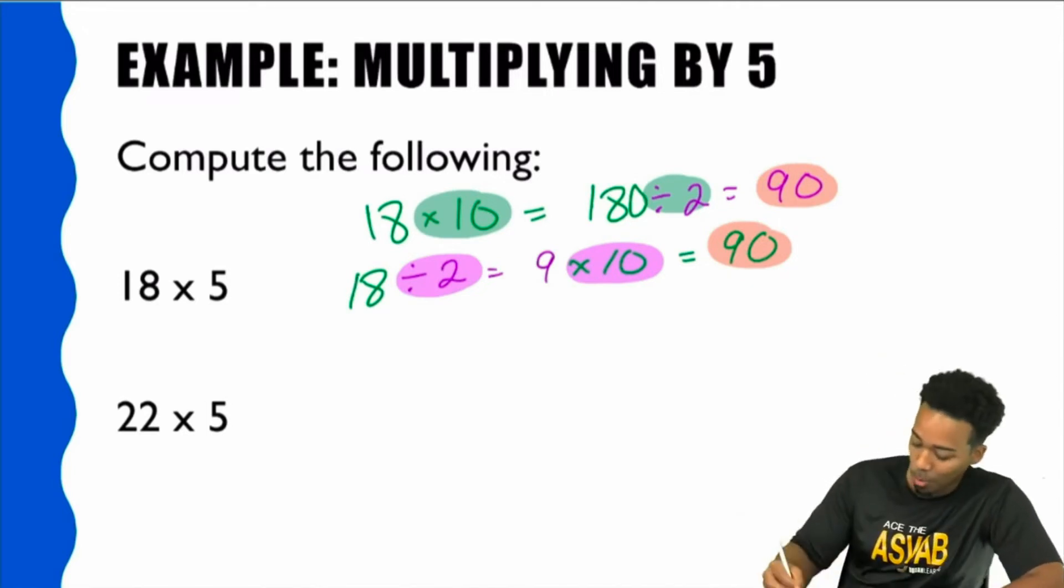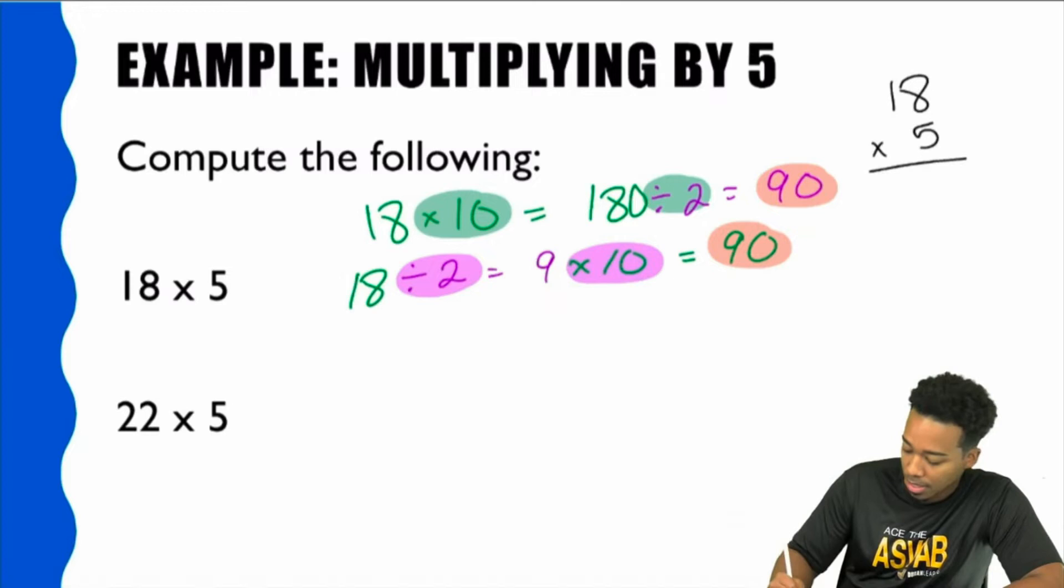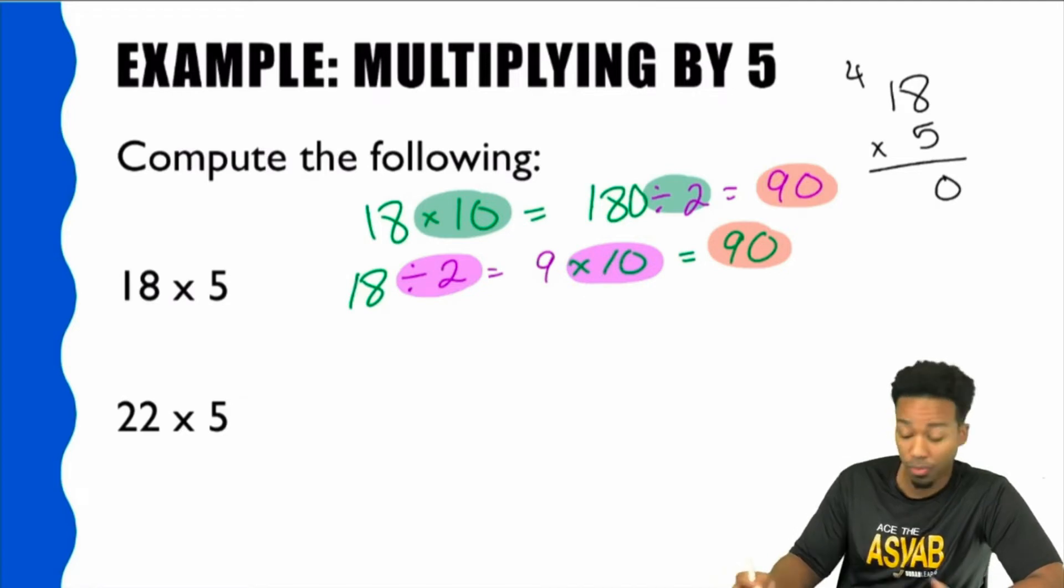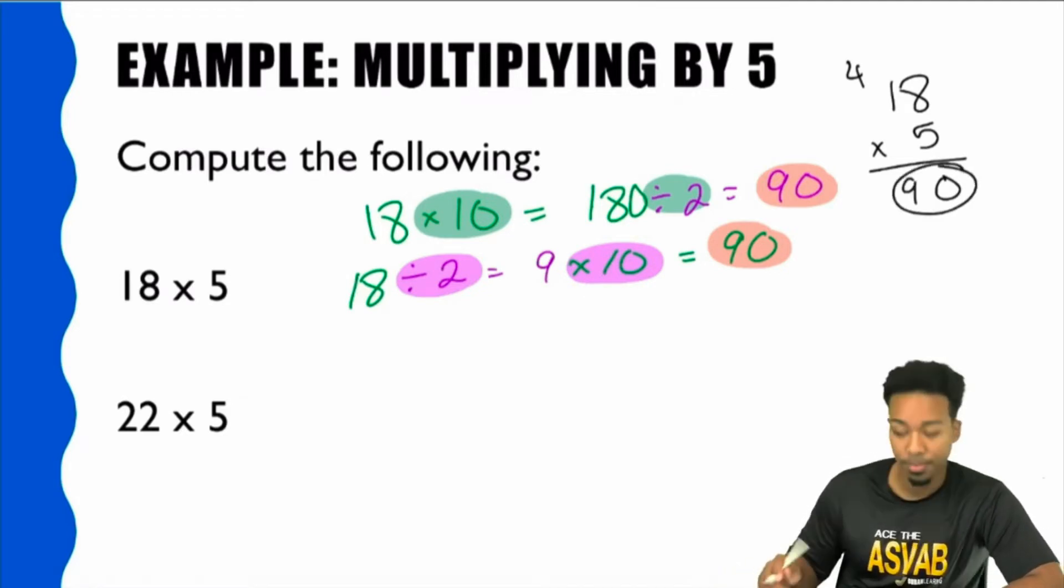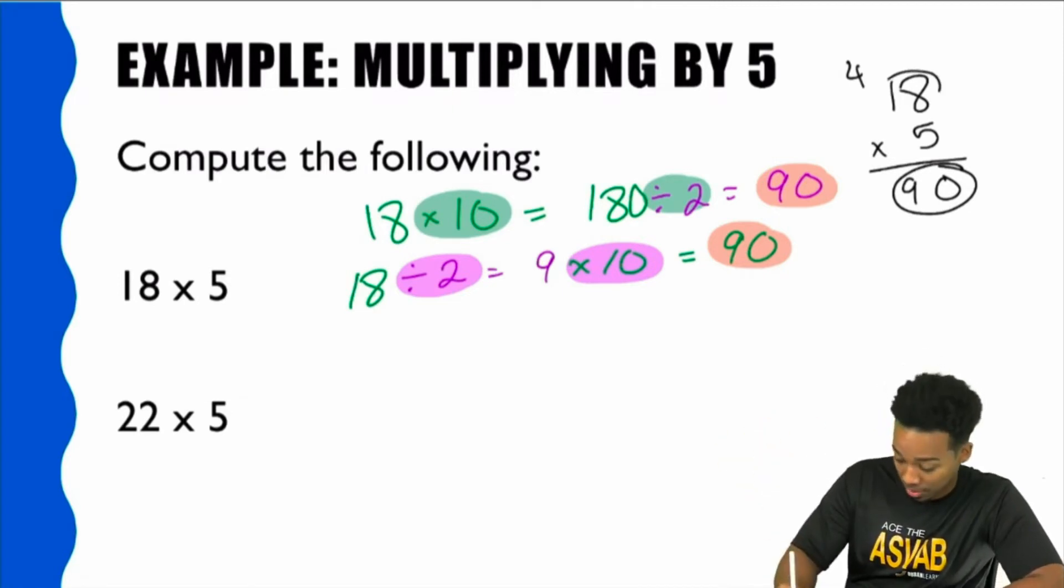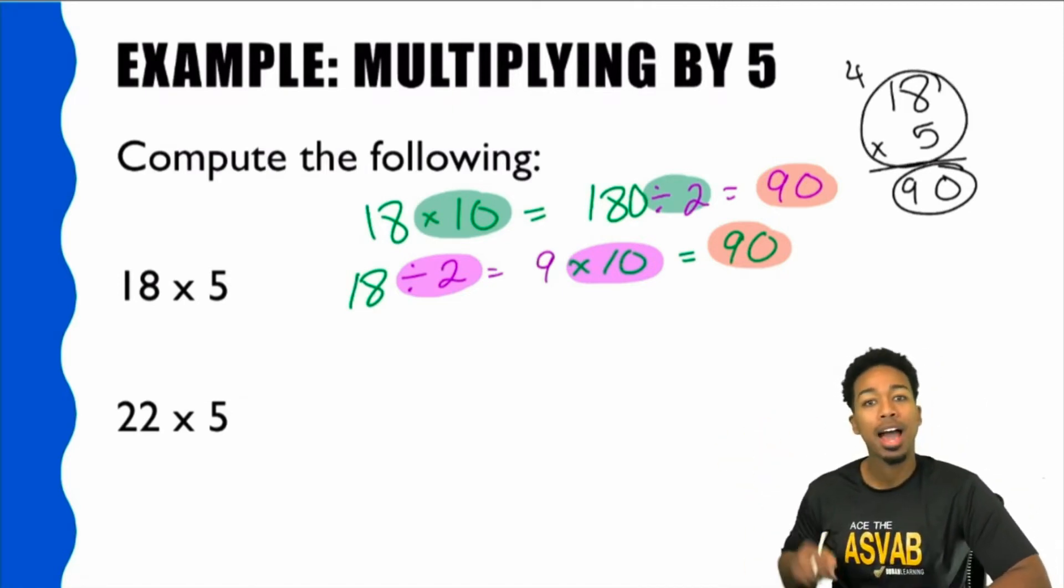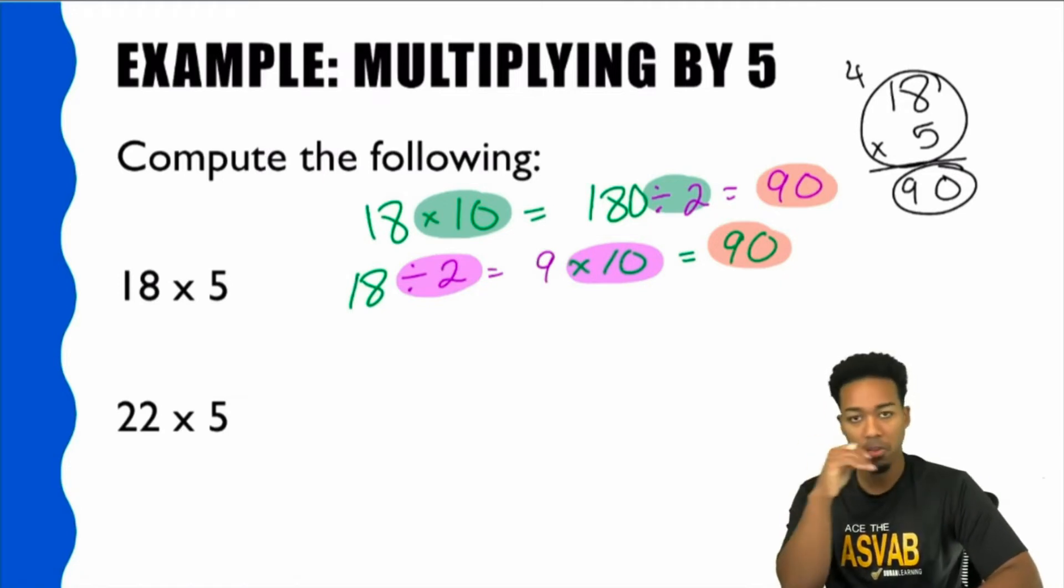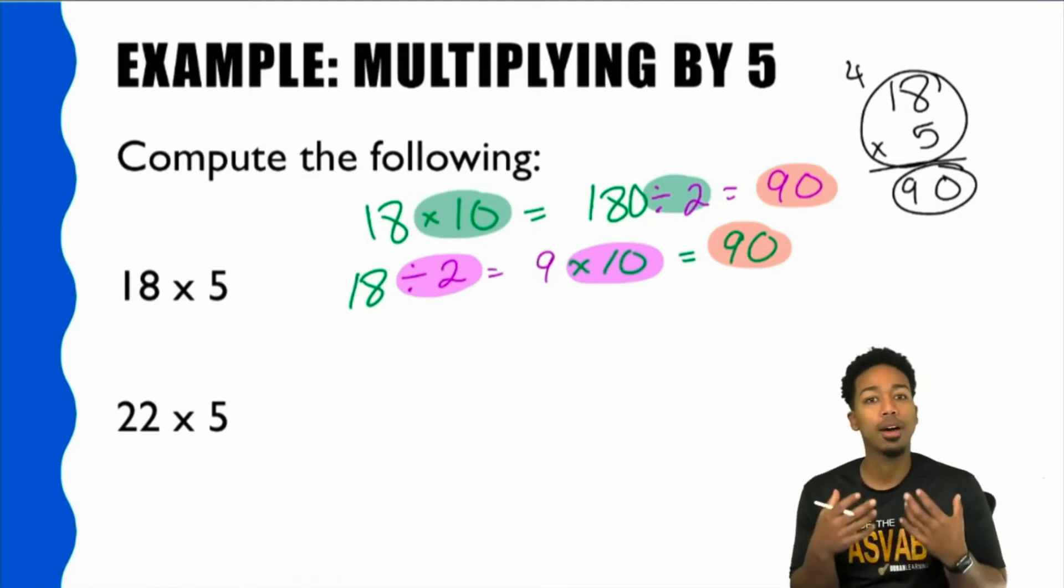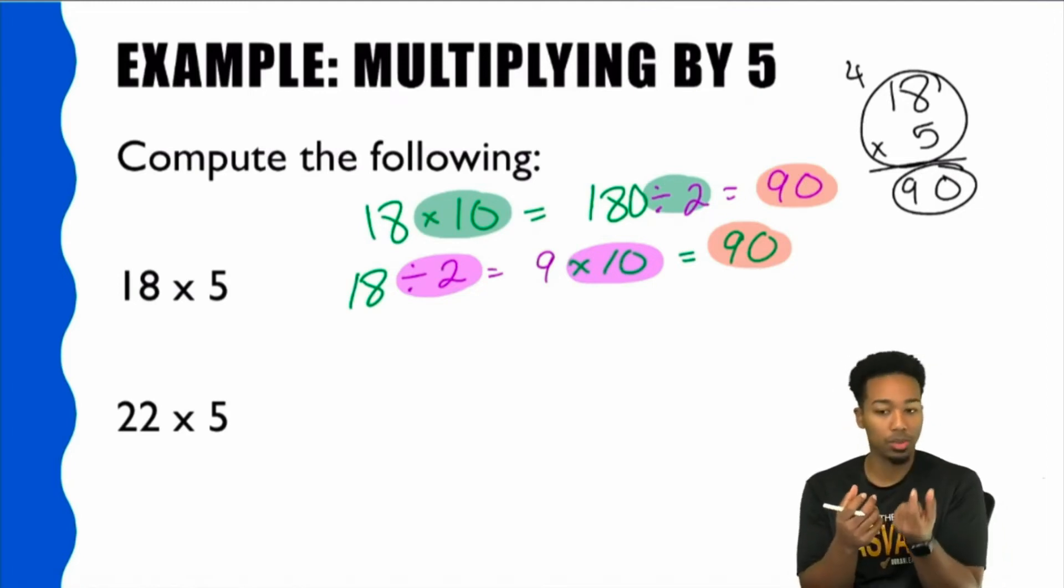And so if you did it the normal way, look at how long this would take. 18 times 5, 8 times 5, that's going to give you 40, carry the 4. 1 times 5 is 5, plus 4 gives you 9, 90. By the time you write 18 times 5 down, by the time you write that part down, I would have already done it. Alrighty. That's the cool thing about knowing how numbers work, guys. Seriously, this is all about helping you improve by doing these little things right.